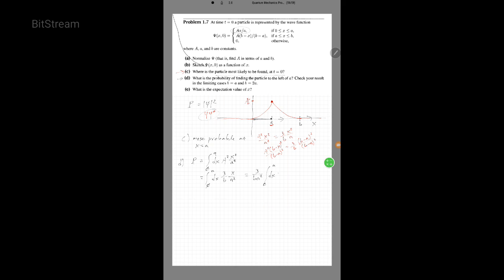So my probability of finding it between, like to the left of A, is just going to be 3 over B A squared, and then the integral of that guy is going to just be X cubed over 3.